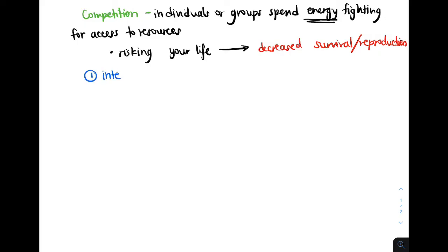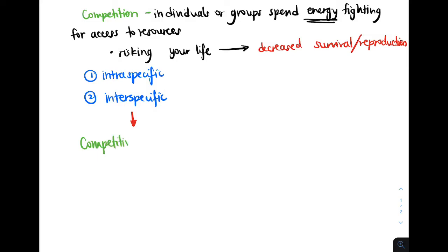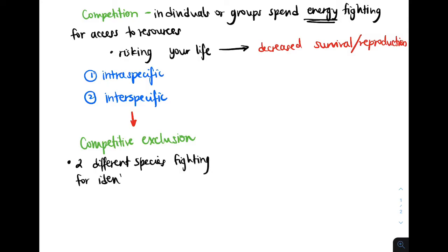There are two kinds of competition: intraspecific competition and interspecific competition. Interspecific competition is when two different species are competing for the same resource. The resource is often limited, so not all individuals can have a share. Interspecific competition gives rise to the idea of competitive exclusion. Keep in mind that food is not the only resource organisms compete for — it can be space, habitat, or other conditions. These different resources are all part of a species' niche.